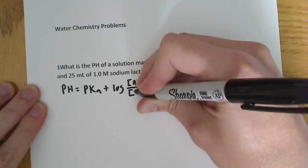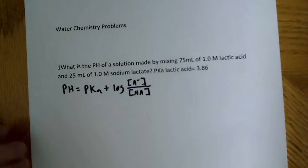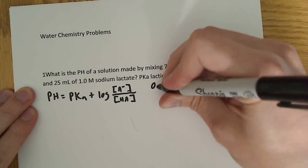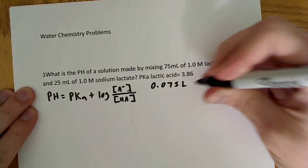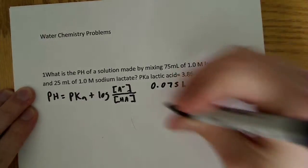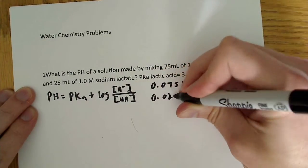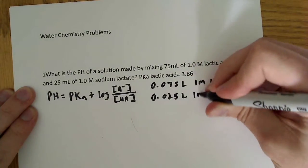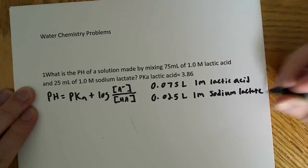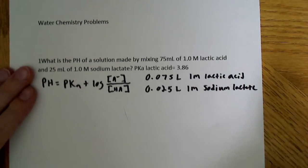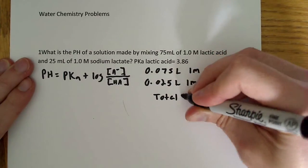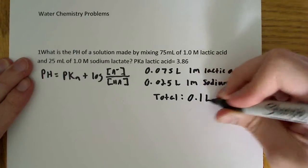After I get the equation down, I also like to convert everything to liters. So that's going to be the second step here. So we'll have 0.075 liters of 1 mole lactic acid and 0.025 liters of 1 mole sodium lactate. I also like to note the total number of liters, so the total in this case will be 0.1 liters.